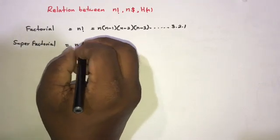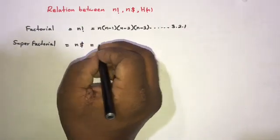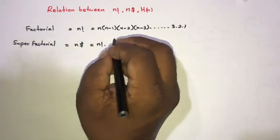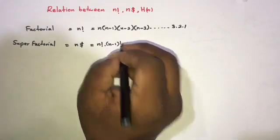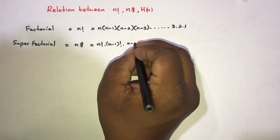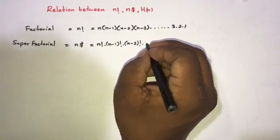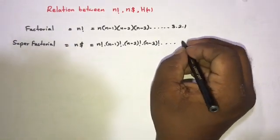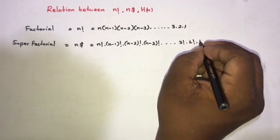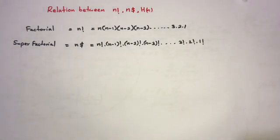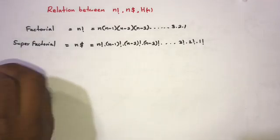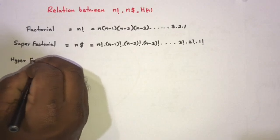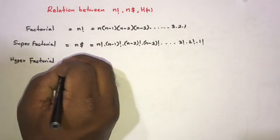If we talk about super factorial, we define it with the sign n dollar sign. We know the formula: this is equal to n factorial times (n minus 1) factorial times (n minus 2) factorial times (n minus 3) factorial, going to 3 factorial, 2 factorial, 1 factorial.